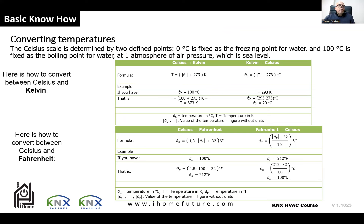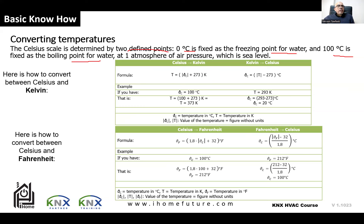Now we're talking about converting temperatures and the different temperature units. We have the Celsius temperature, which is the easiest one — suitable to our daily life. Zero Celsius is the temperature when water freezes and ice is formed. One hundred Celsius is the temperature when water boils. The Celsius scale is determined by these two defined points, at one atmosphere of air pressure.